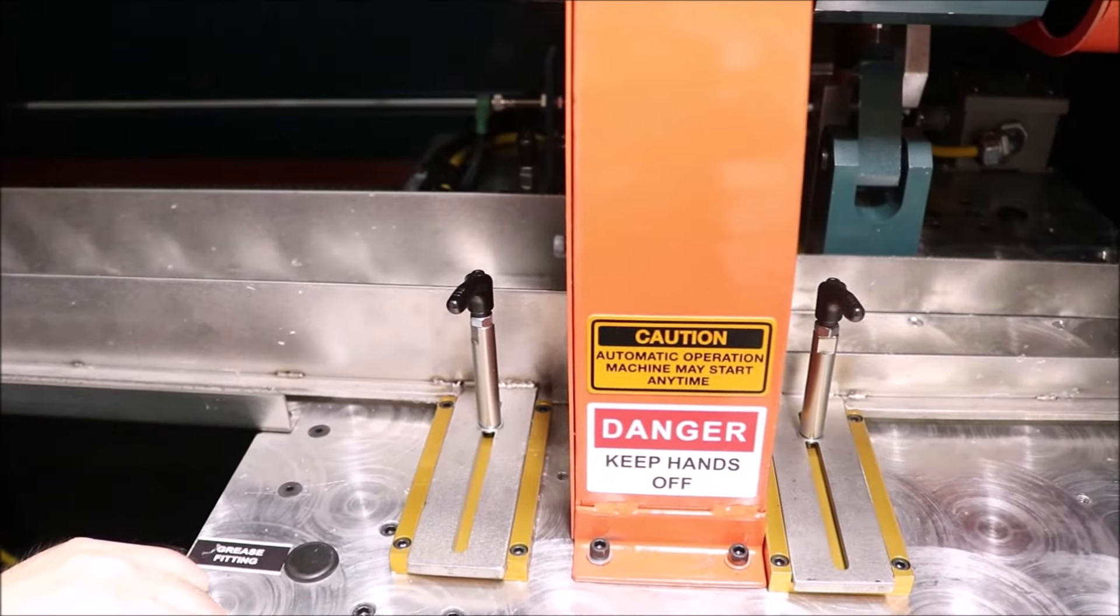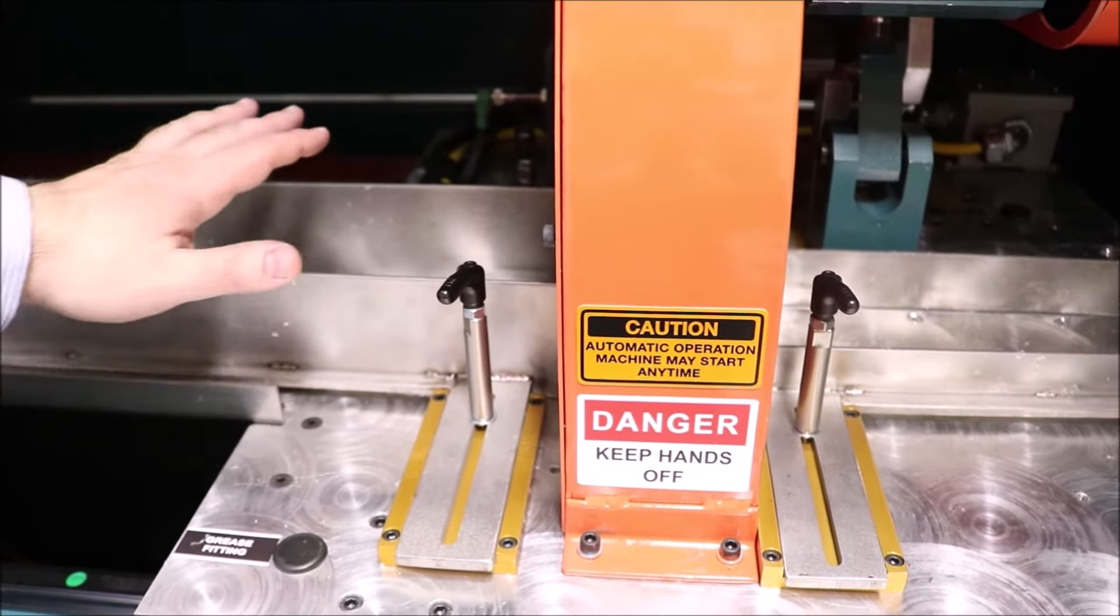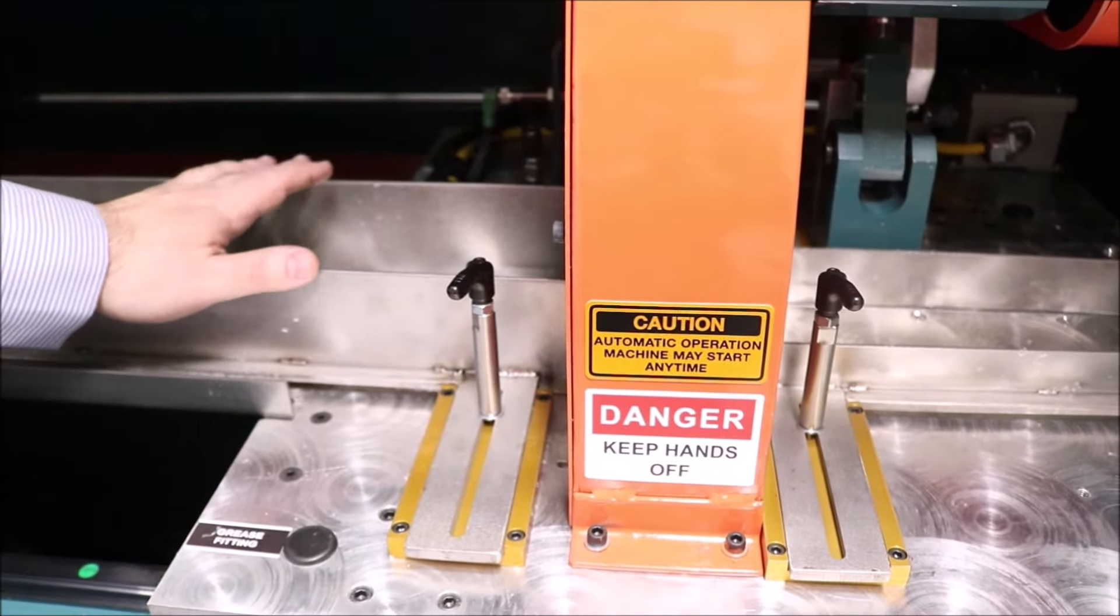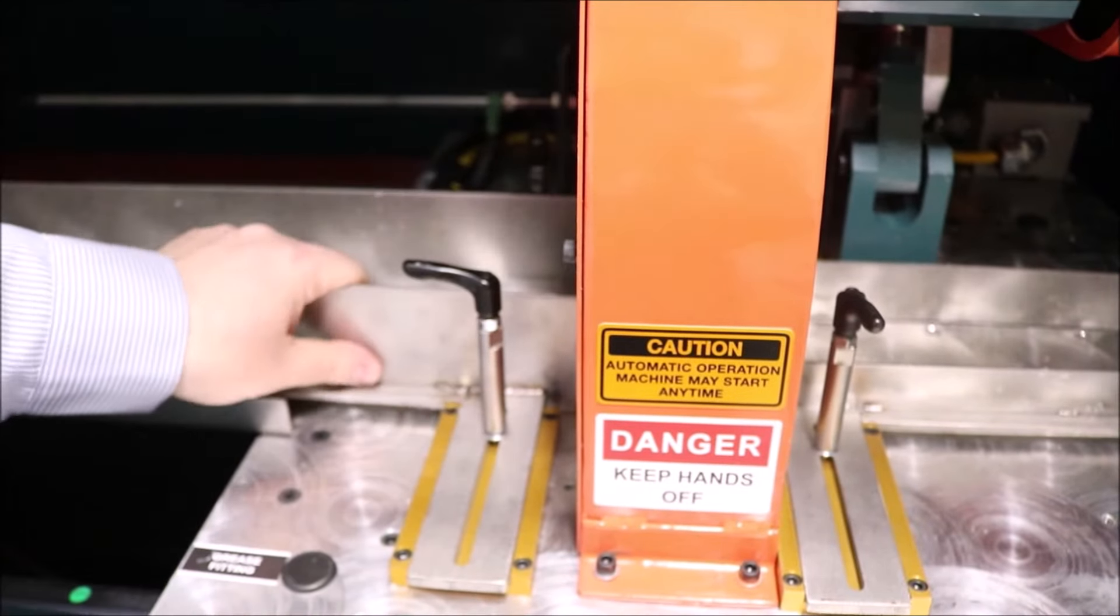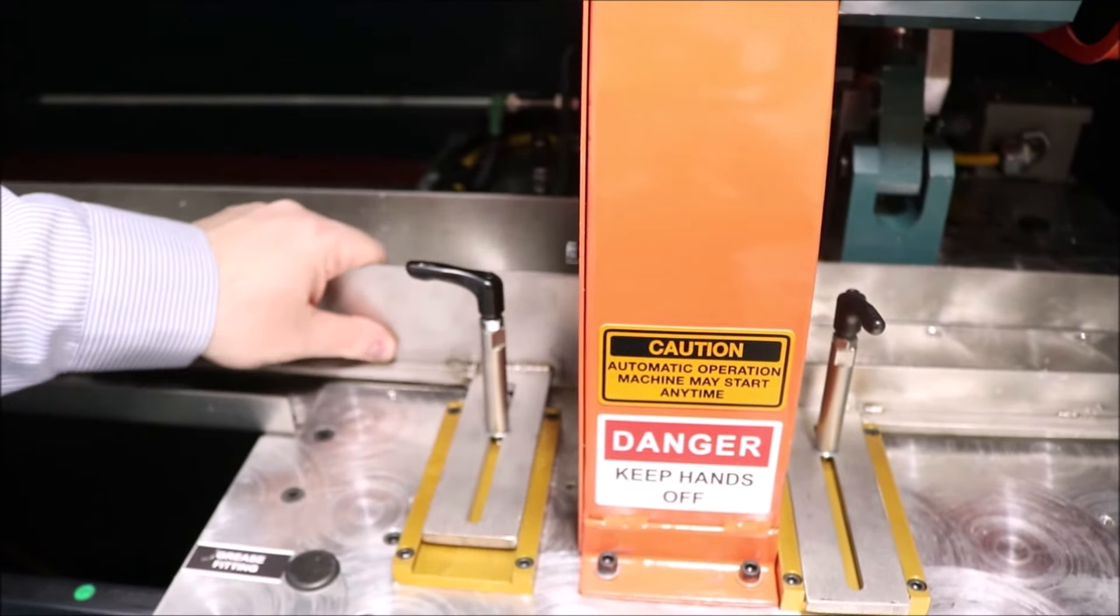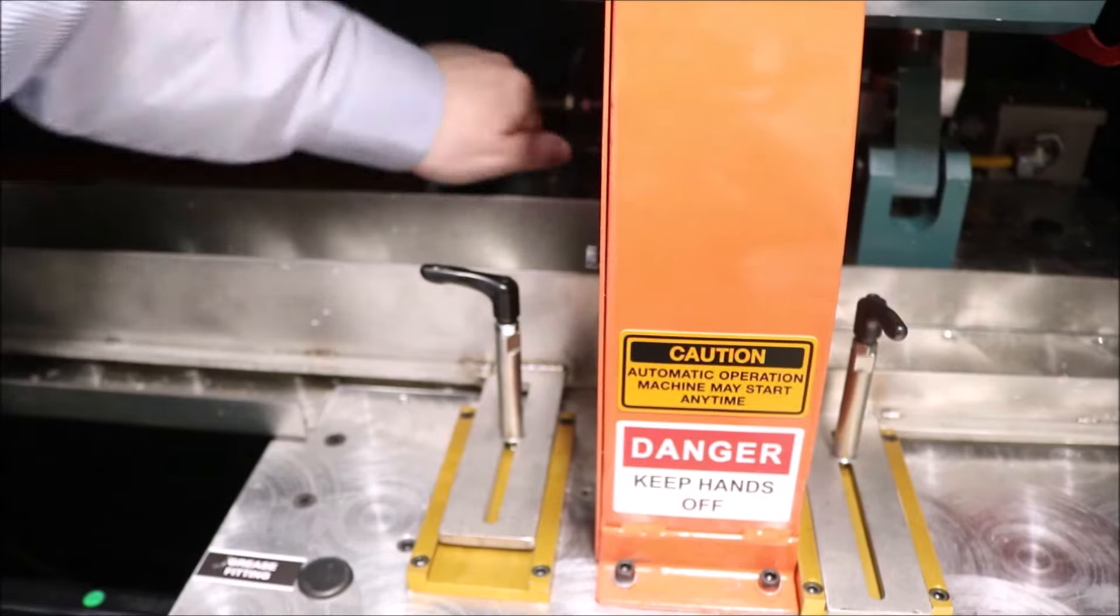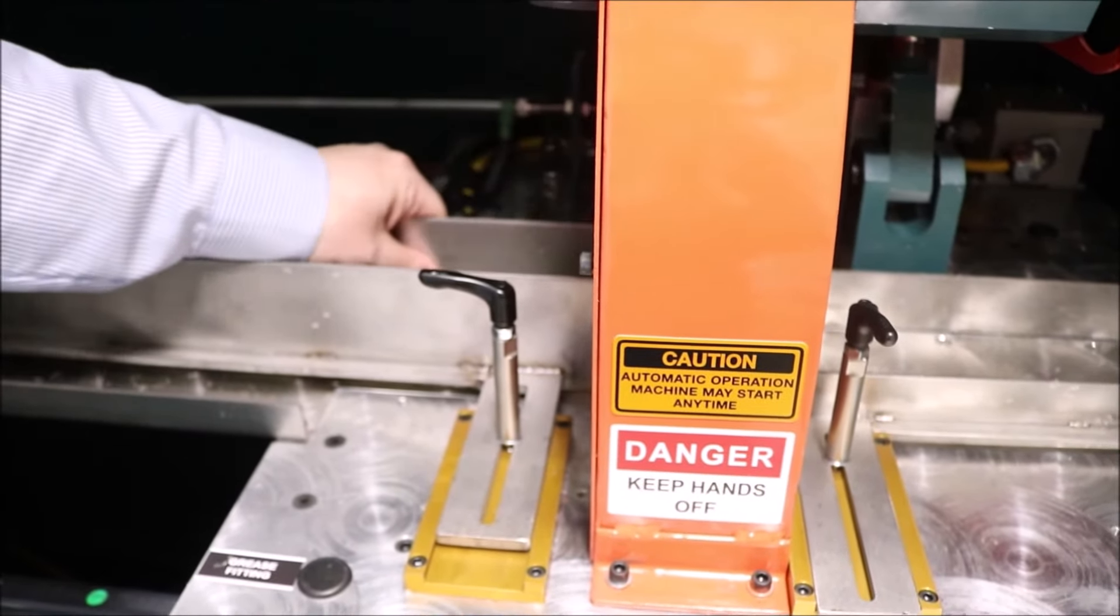One adjustment that we have on the down cut servo saw is the adjustment of these guides. In order to adjust them, we will unscrew this handle here and we will be able to adjust the guide as we need.